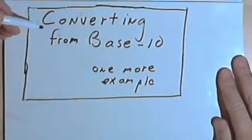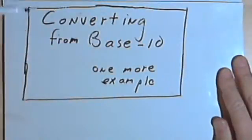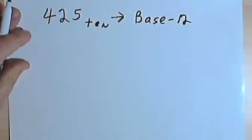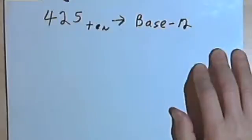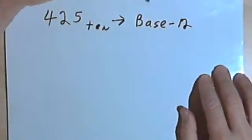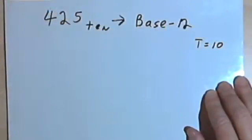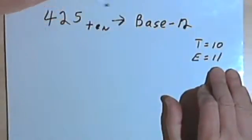In this video I want to do one more example of converting from base 10 into another base, and specifically into a base greater than 10. I'm going to use base 12. Just like when we dealt with base 16, when we get to bases greater than 10, we've got to use letters to represent digits more than 9. We're going to use 't' to represent 10, and 'e' to represent 11. The problem is 425 base 10, and I want to convert that to base 12.